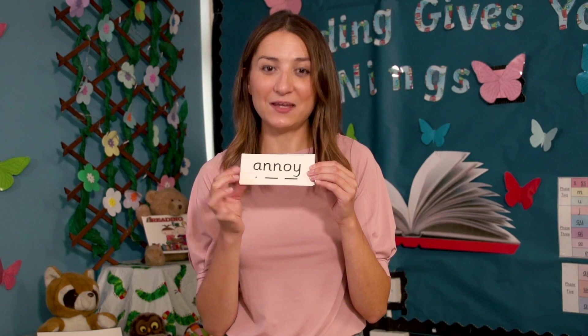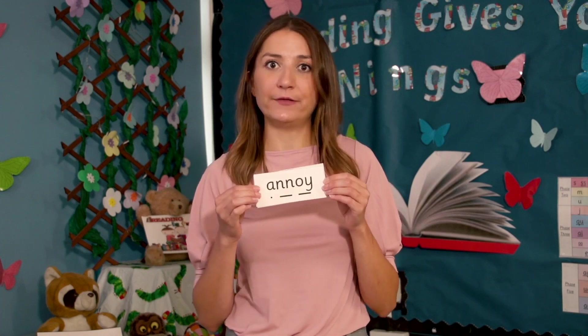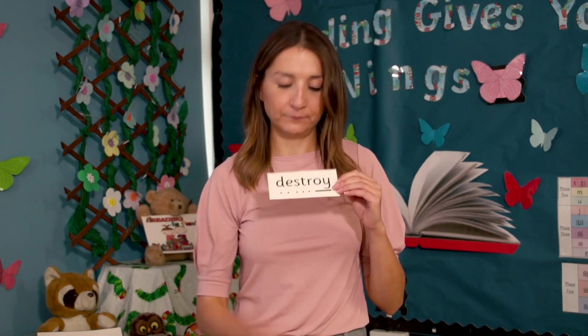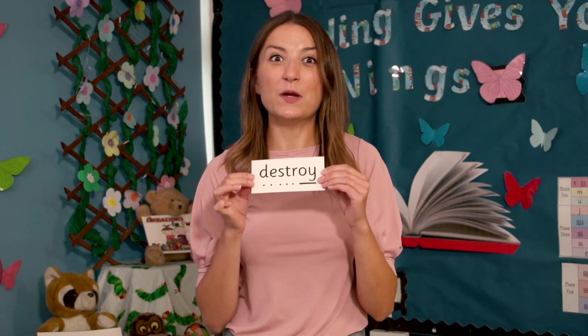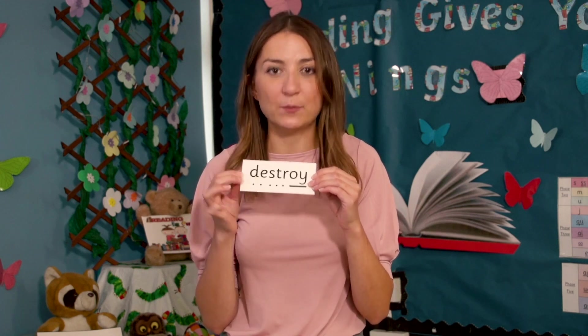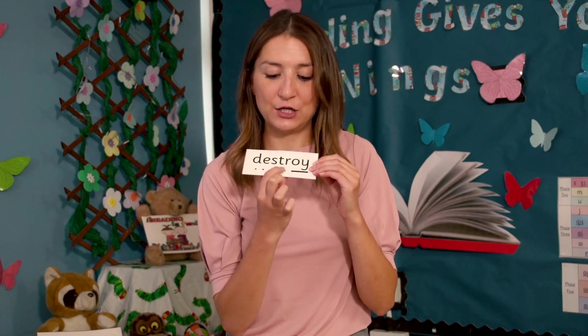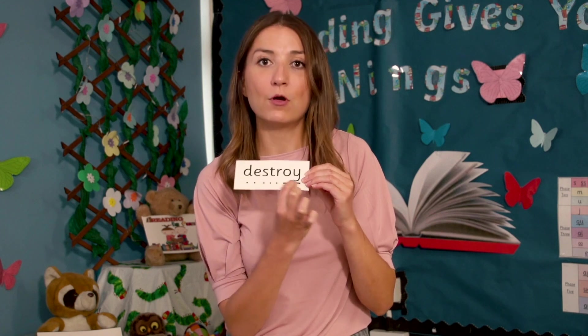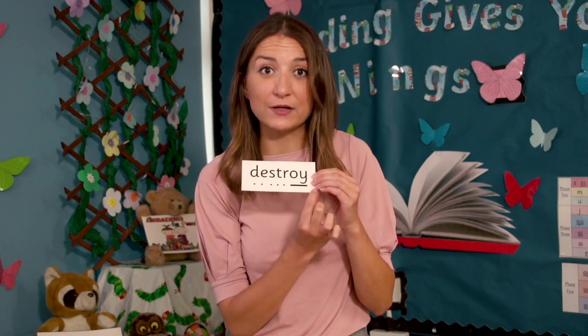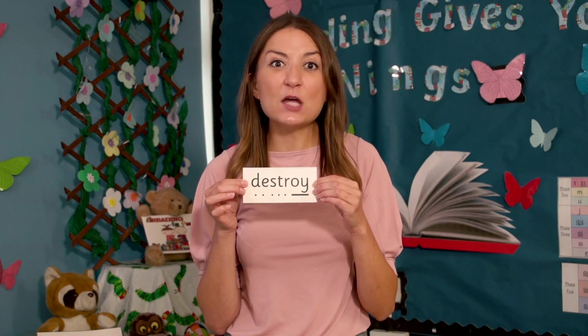Let's read the word together. A, n, j, oy — annoy. My little brother can be very annoying. Let's read the word together, it's a longer word so let's chunk it up. D, e, s — des. T, r, oy — troy. Destroy. If you destroy something, you break it so badly that it won't work anymore. Great reading.